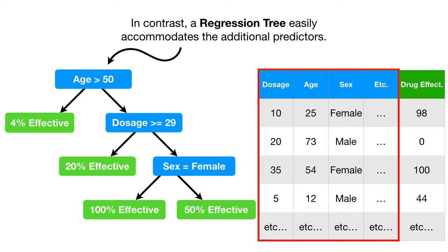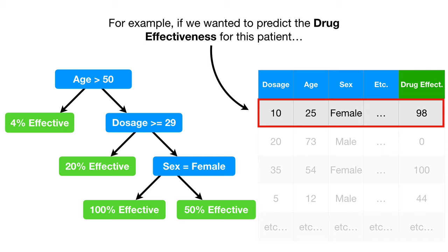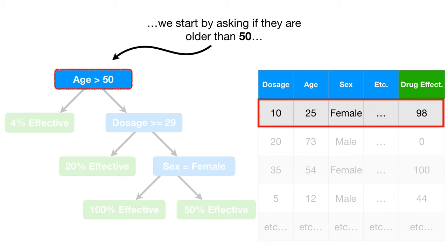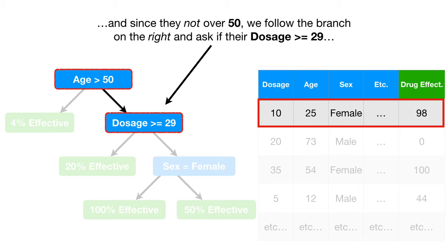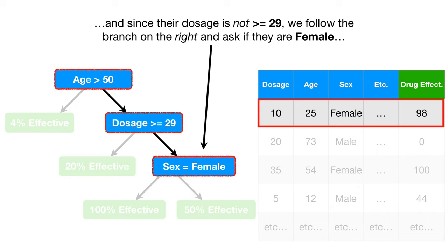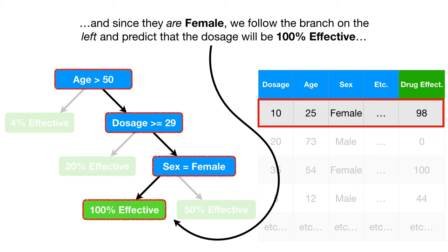For example, if we wanted to predict the drug effectiveness for a patient, we would start by asking if they are older than 50. Since they are not over 50, we follow the branch on the right and ask if their dosage is greater than or equal to 29. Since their dosage is not greater than or equal to 29, we ask if they are female. And since they are female, we predict that the dosage will be 100% effective. And that's not too far off from the truth, 98%.